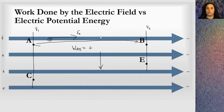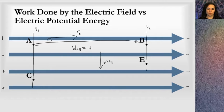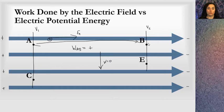We know it requires zero energy to move along an equipotential, so work equals zero moving perpendicular to the field lines. Therefore, work from A to B equals work from A to E, and work from A to B equals work from C to E — we've moved the same distance parallel to the electric field lines.